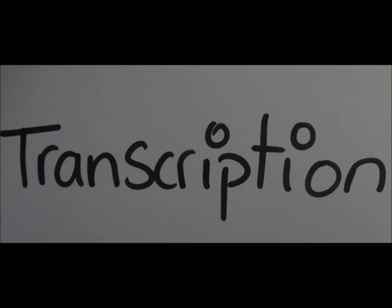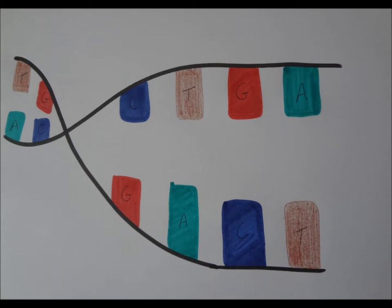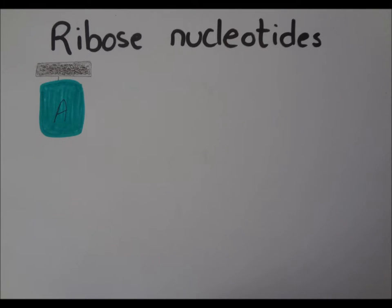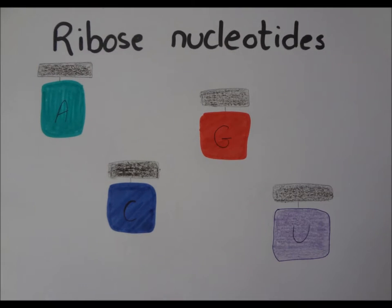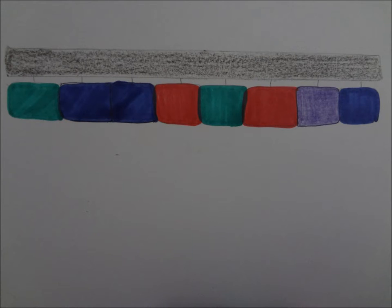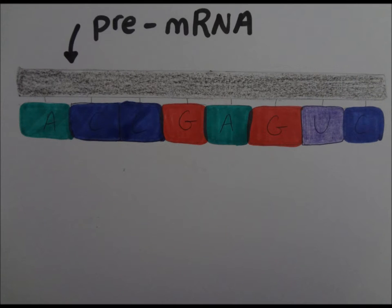So, transcription. As the DNA strand unwinds, RNA polymerase causes the ribose nucleotides A, C, G and U to bind to their complementary base pairings. As a result, you get a single strand of RNA known as pre-mRNA.